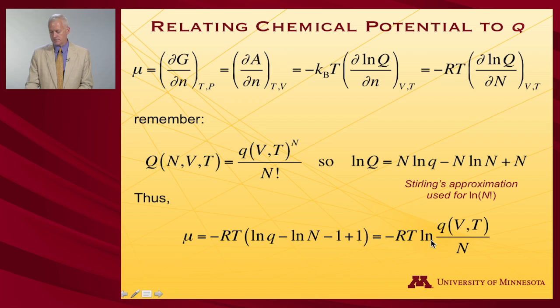I get minus RT log. I'll express this difference as a ratio. The chemical potential is minus RT log of the molecular partition function. So I've managed to get it all the way down to the molecule divided by the number of particles.